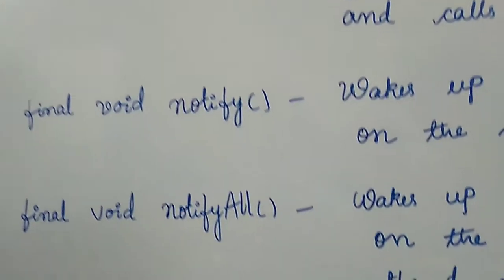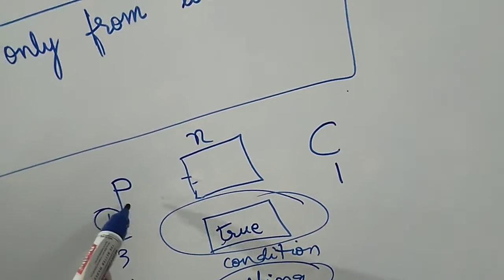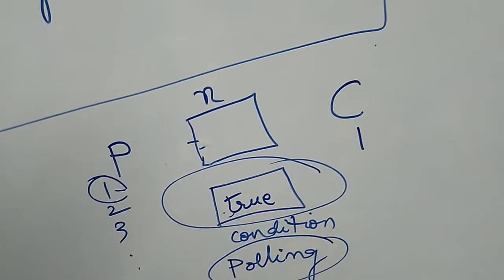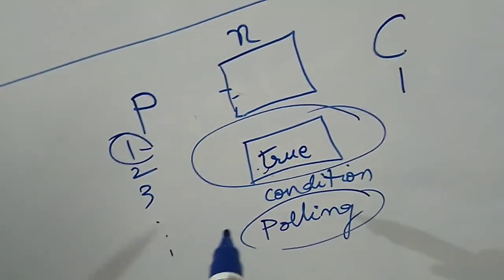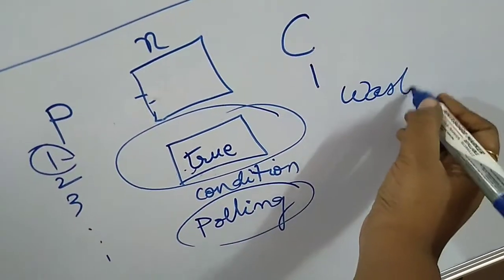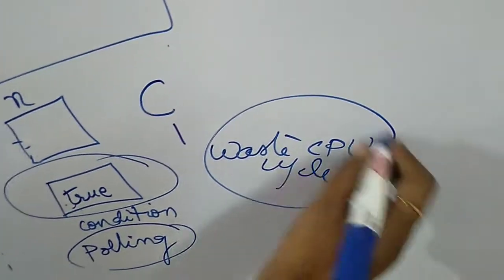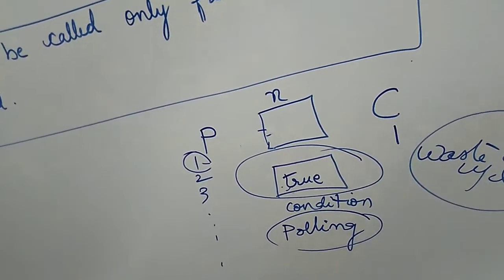The problem with polling is that both the producer and consumer repeatedly check the condition — the producer checks whether it's true and the consumer checks whether it's false. This keeps wasting a lot of CPU cycles. A program written in such a manner, using polling, is inefficient code. Java uses the elegant methods wait, notify, and notifyAll instead.